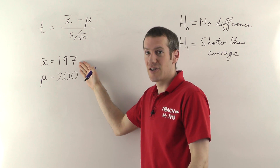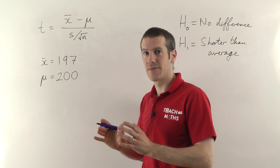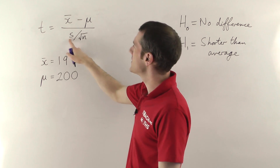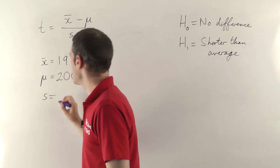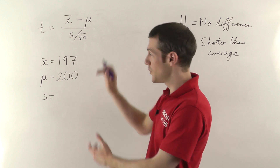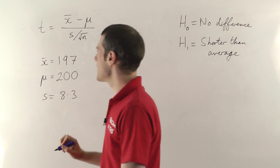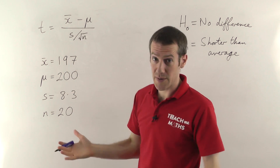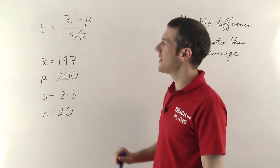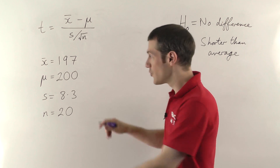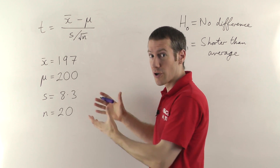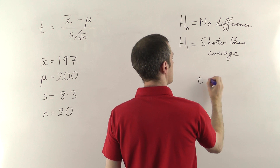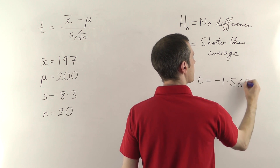The question, as with all t-tests, is whether this is statistically significant — could they be shorter just by chance, or do the players from your state all tend to be shorter on average? The standard deviation of the 20 basketball players is 8.3, and n, the number of samples, is 20. When you plug all the numbers into the formula, the t-value you get is minus 1.560.